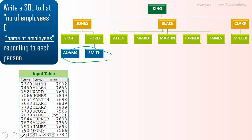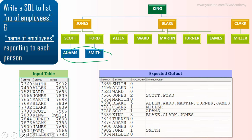For employees with no reports, you just need to leave it as null or show the number of employees reporting under them as zero. Here is the expected output. As you can see, under John there are two people reporting to him directly — not indirect reporters, but direct reporters.